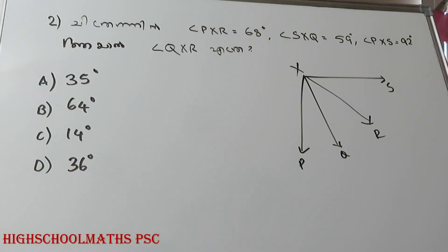Second question. In this figure, angle PXR is equal to 68 degrees, angle SXQ is equal to 59 degrees, and angle PXS is equal to 92 degrees. What is the measure of angle QXR?